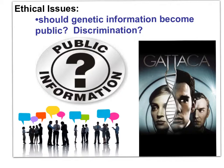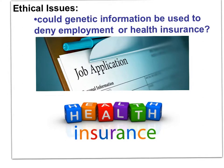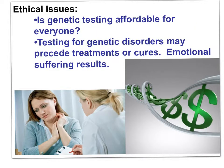In the movie Gattaca, a young man's dreams are unavailable to him because of his genetic profile. Could genetic information be used to deny insurance or employment? One might want to know if they have a genetic tendency toward cancer or Alzheimer's disease, with benefits to family or friends — but is the sequencing affordable to everyone, or do only the wealthy benefit?